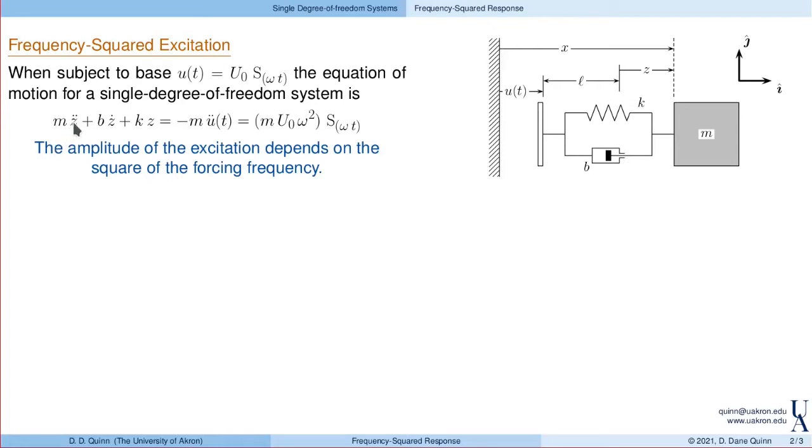The equation of motion looks like m times z double dot, b times z dot plus k times z, where we're measuring the relative displacement between the base and the block, equals minus m times u double dot. With this assumption of harmonic motion, we end up with harmonic forcing where the amplitude of the excitation depends on omega squared, or the square of the forcing frequency.